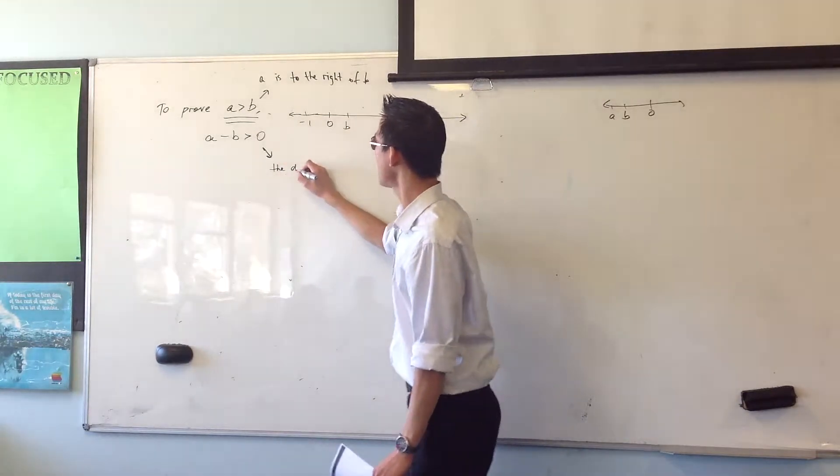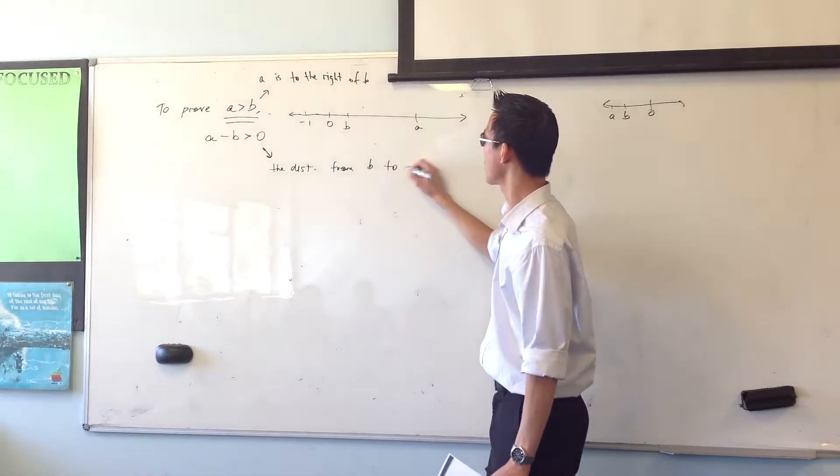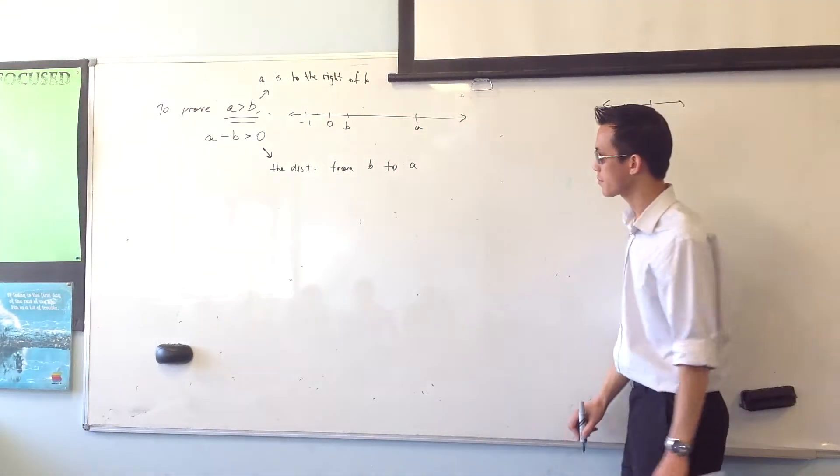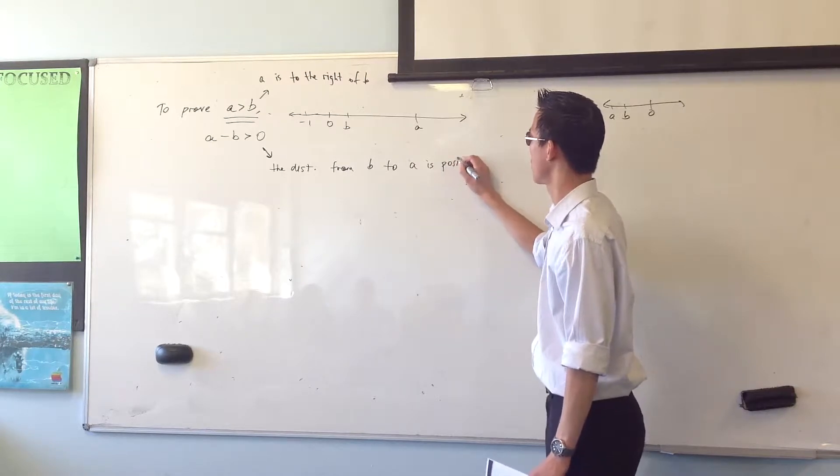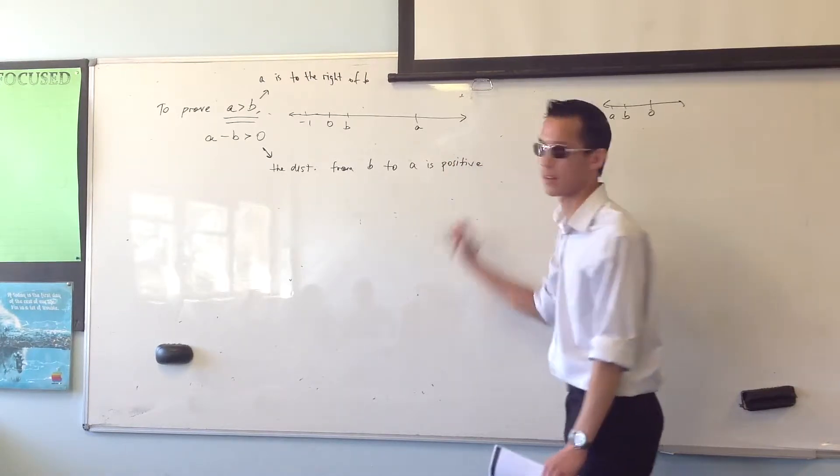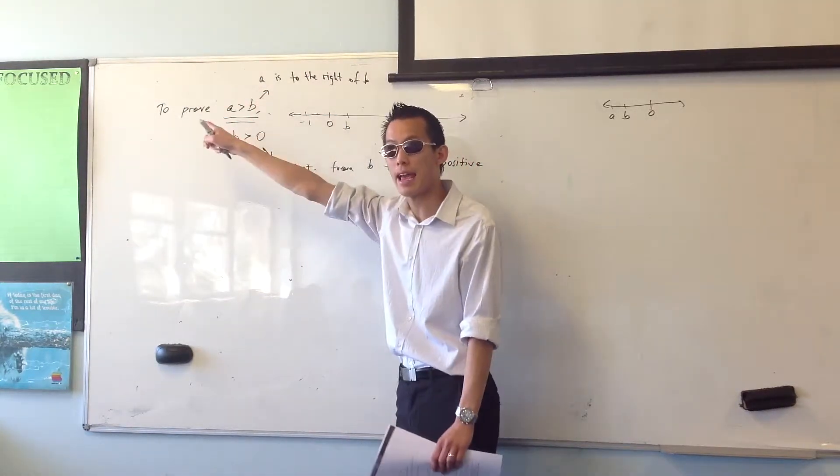So I'm going to say, the distance from b to a, right, that distance is positive. That's what I'm going to say. Okay? How can it be negative if I have to go the other way? Right? From b to a.